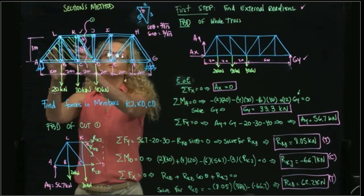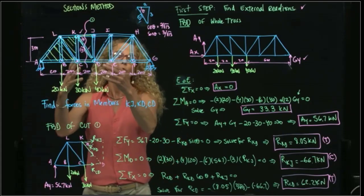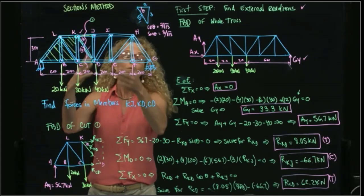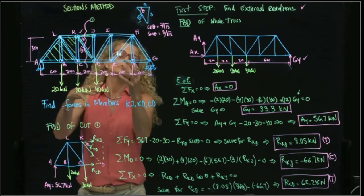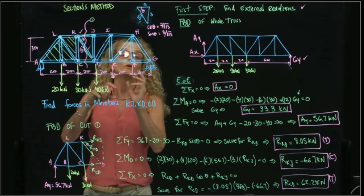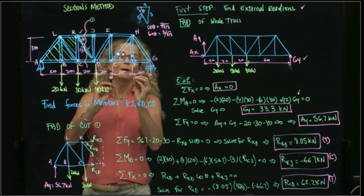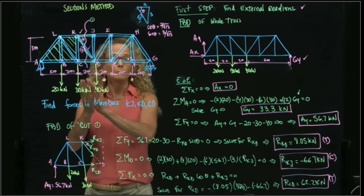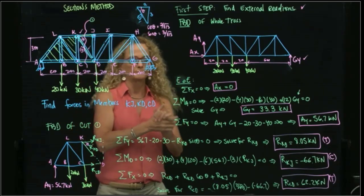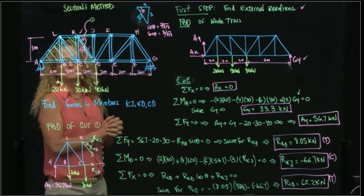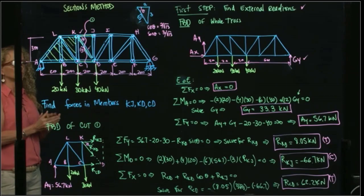Obviously, if we want to find more members, we have to either make a different cut or use the joint method. We could actually combine the joint method with the section method to find additional member forces.